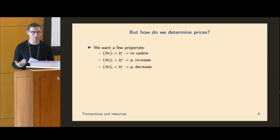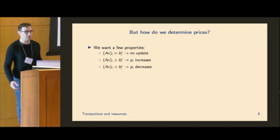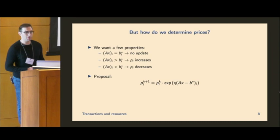And there's a few things that we probably want out of any reasonable pricing mechanism. Well, first, if our consumption of resource i, so AXi, the ith entry of that, is equal to our target. So remember, the target is B star. So B star, the ith entry of that. We don't want an update. That means that essentially we set prices correctly because people are using the amount that we want them to use. On the other hand, if the amount of resource that's being consumed is more than the target, we probably want to increase the price because we're charging too little and vice versa. If it's under the target, we probably want to decrease the price.